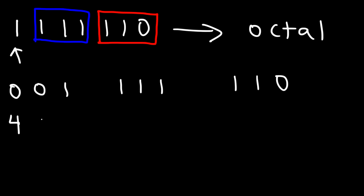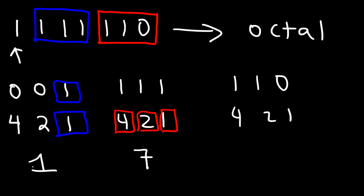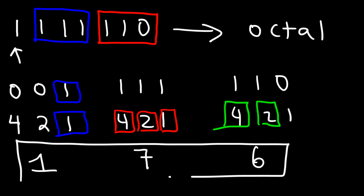Starting with the first group, zero zero one, with place values four two one, the only one present gives a value of one. For the next group, one one one, we add four plus two plus one which is seven. For the last group, one one zero, we only add four plus two which is six. So the answer is one seven six, or 176.